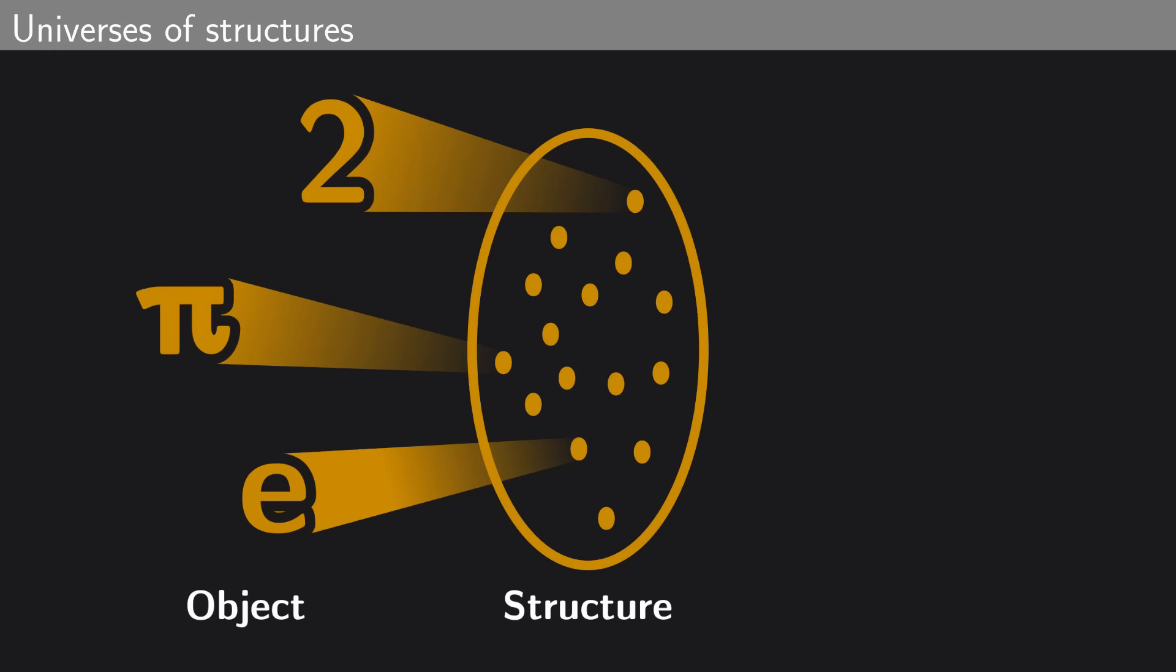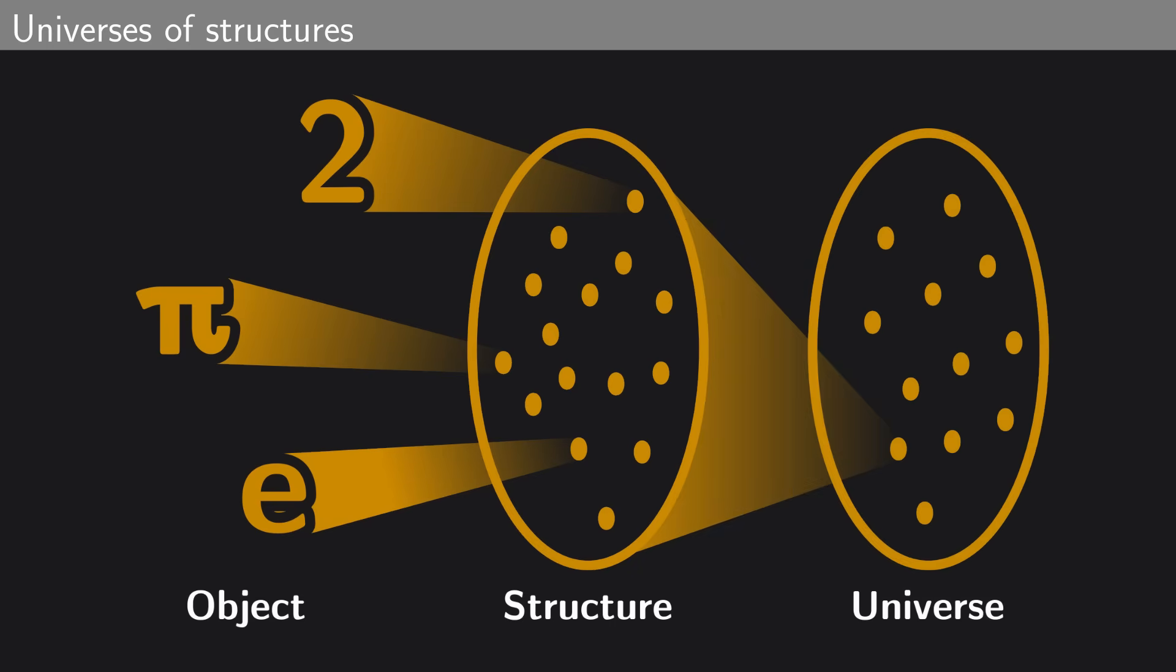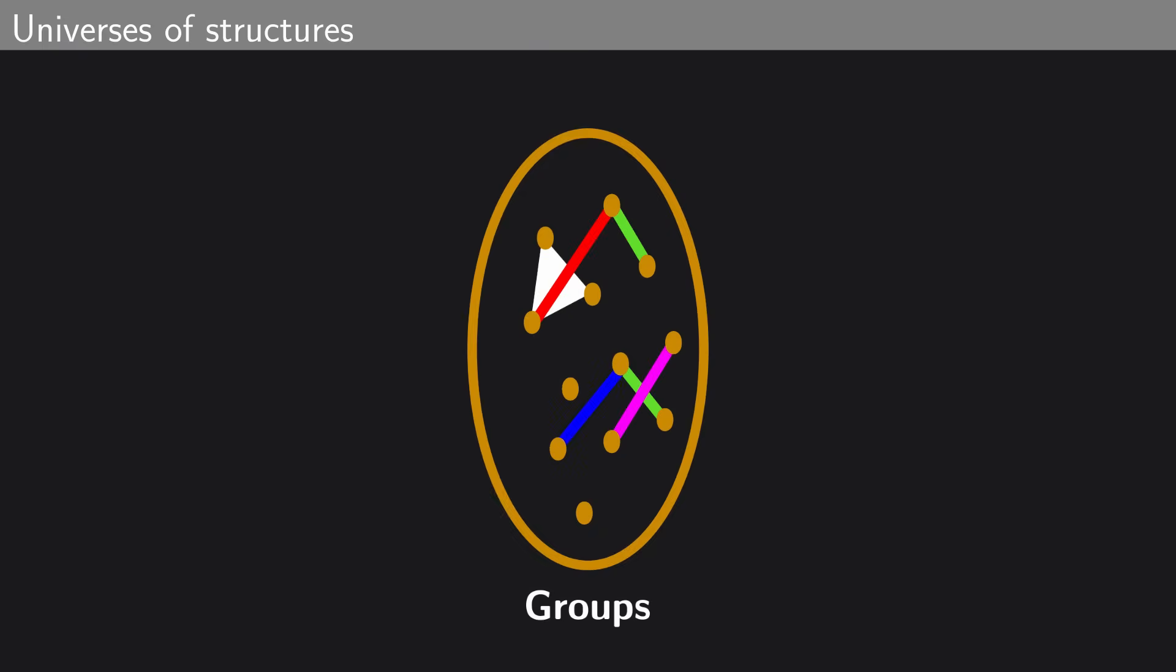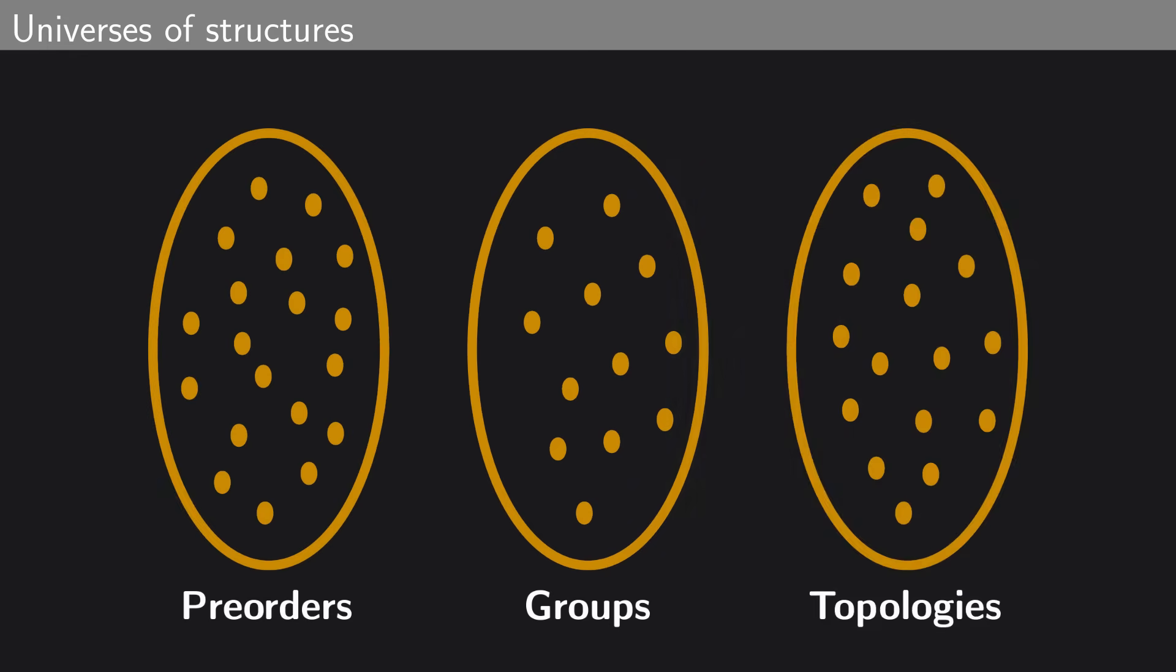But remember I said there's another step of zooming out to be done here. When you work with, say, groups, then the groups become your individuals, your atoms. So we can zoom out and consider the universe of all groups. What a group theorist is doing is exploring this universe. What relationships there are between groups, what are the different classes of groups we can articulate, what are the different ways of combining groups to form new ones, etc. And likewise, there's a universe of pre-orders, a universe of topological spaces, a universe of vector spaces, and so on. This is what mathematicians do. They define a notion of structure, and then explore the universe of those structures.